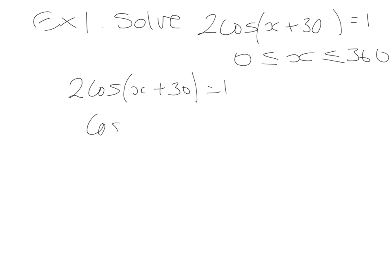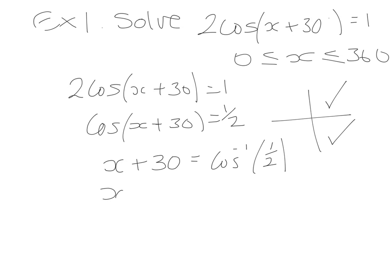So at this stage our y value is positive. So we're looking for when the cos function is positive on our CAST diagram. So that's the first and the fourth quadrants. We're going to take the inverse cos the same as before, but instead of just having x on the left hand side we have x plus the phase. So cos⁻¹(1/2). So that gives us x + 30 = 60 degrees is our first quadrant.